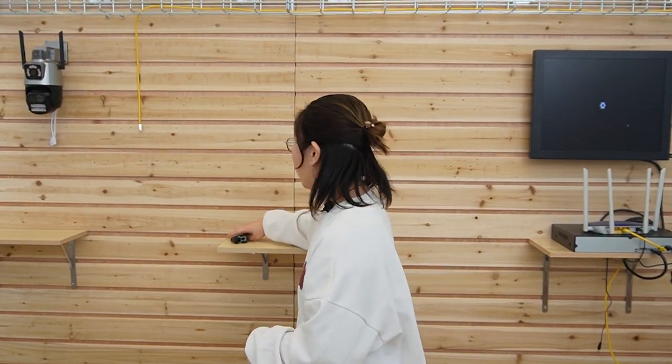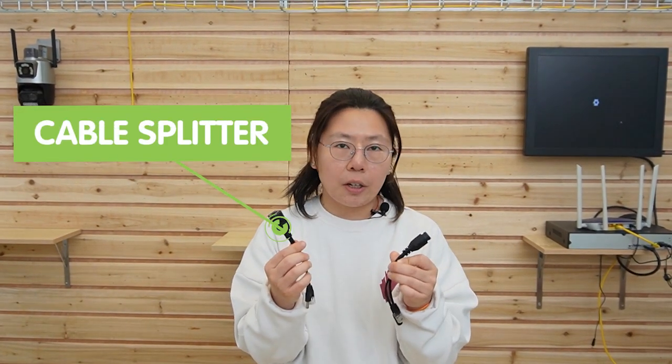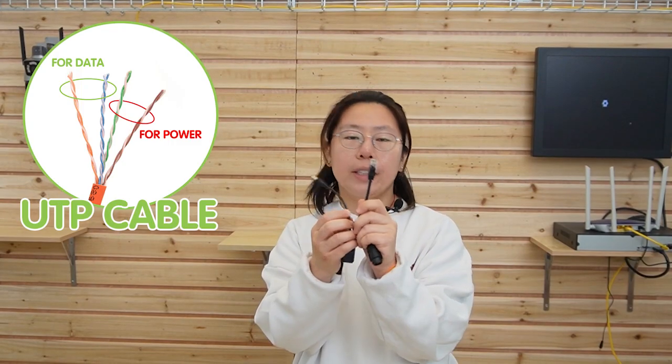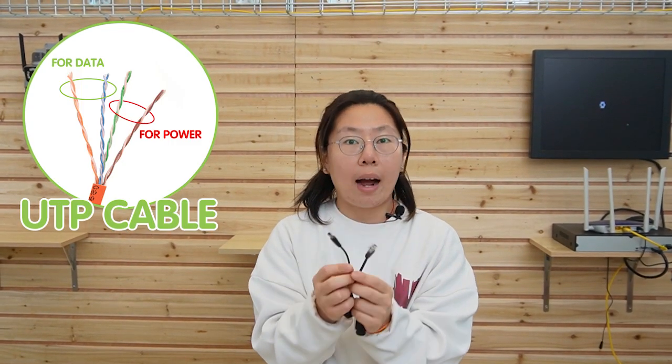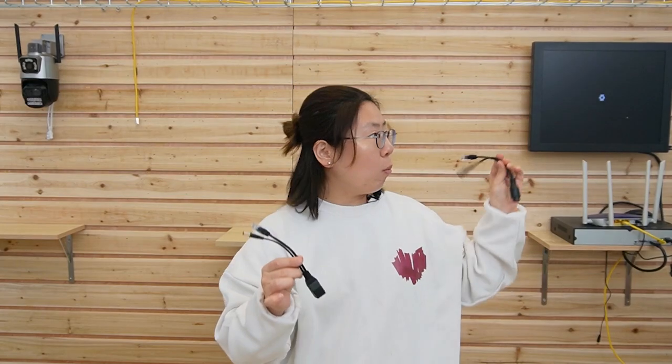So we need this tool. These two are the cable splitters. You can divide the UTP cable into two sets, one for data and one for power. And we are going to have one set on each end. And now let's connect the camera end first.